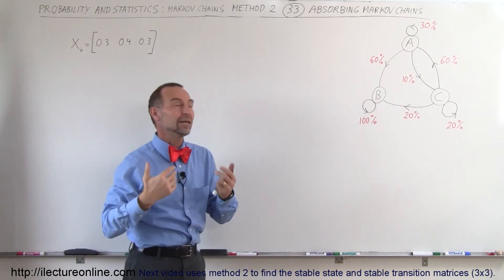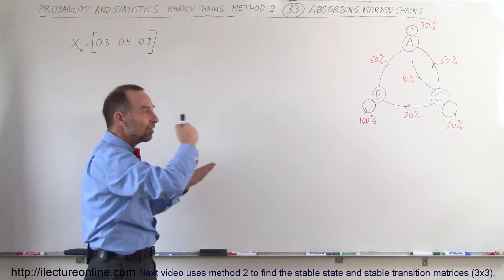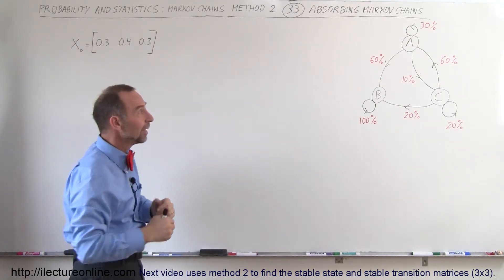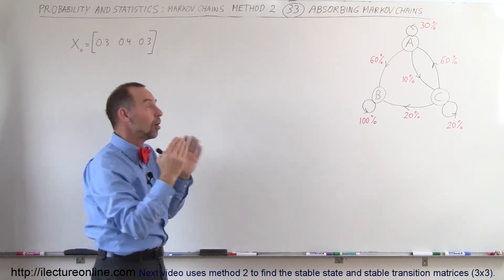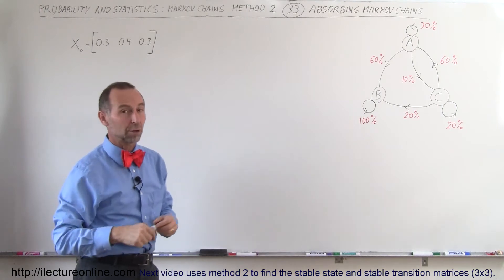And that's what we mean with, well, the matrix that goes along with that and the order of events when we multiply the state matrix with the transition matrix which we'll draw in just a moment. Eventually we'll end up with all the customers at B, none at A and C, and we call that an absorbing Markov chain.